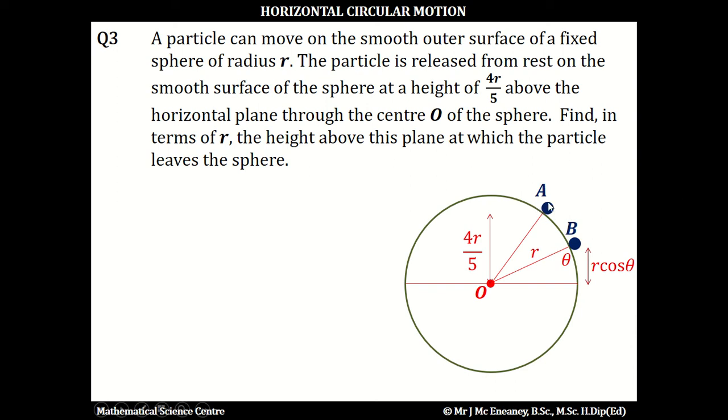It's released from point A at a height 4R over 5 above the horizontal plane through O. As it moves down the sphere, it reaches some point B. The energy at A equals the energy at B. If we let this angle be theta, this angle here would also be theta, and this would be R cos theta.